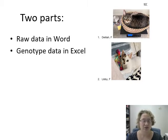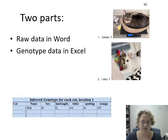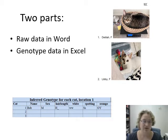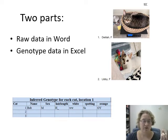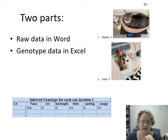The next part is we're going to take those pictures and put in their genotypes in Excel. We're going to have two tables, one for each location, and we're going to genotype them for those four loci: hair length, whether or not they're fully white, spotting, and orange — which are the ones we can tell easily on sight.